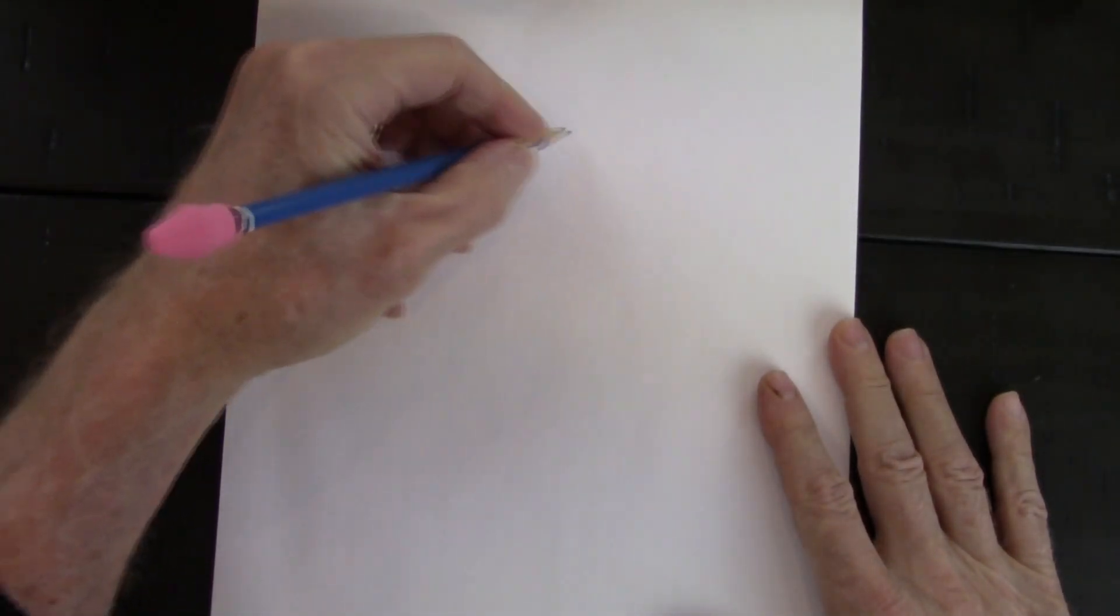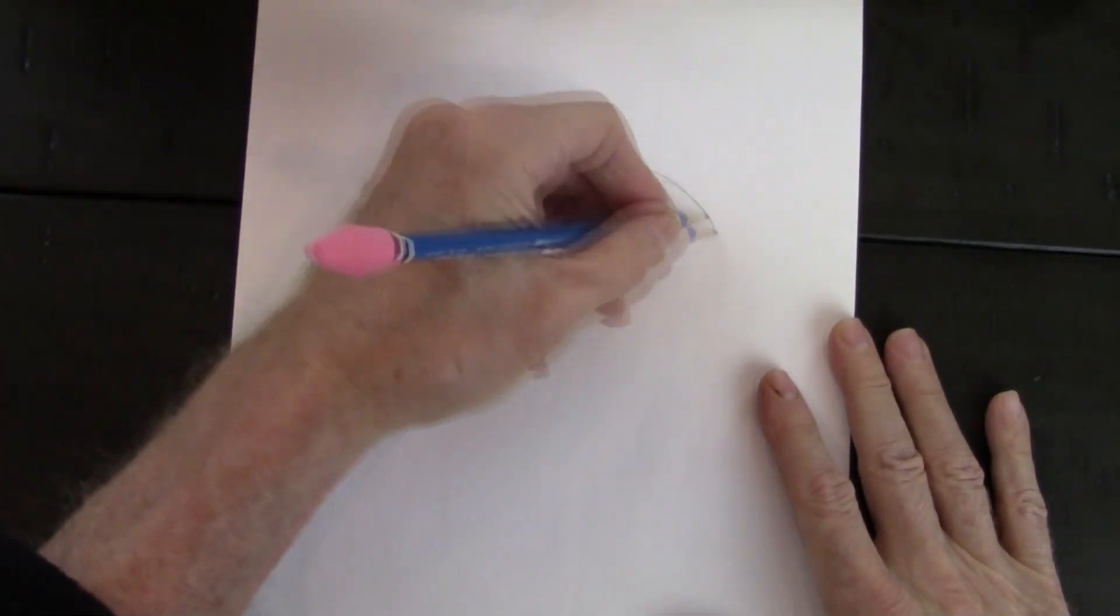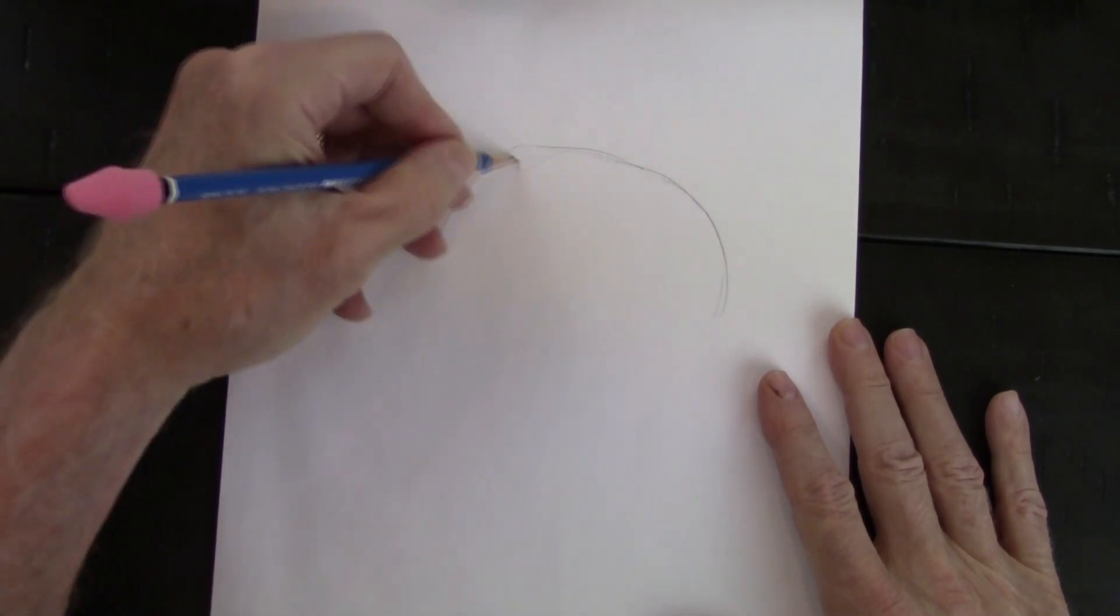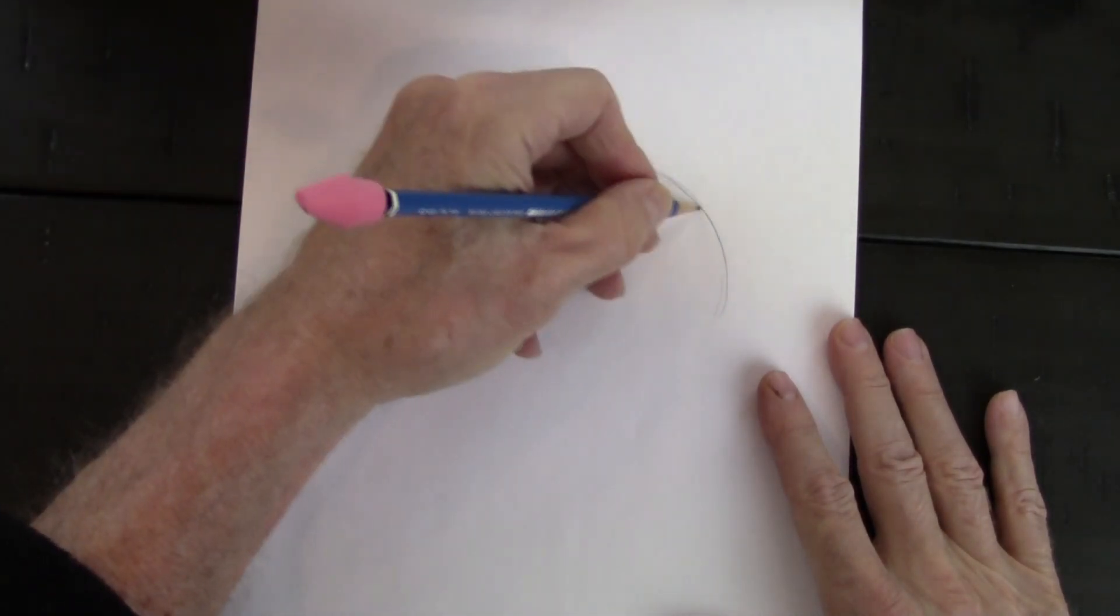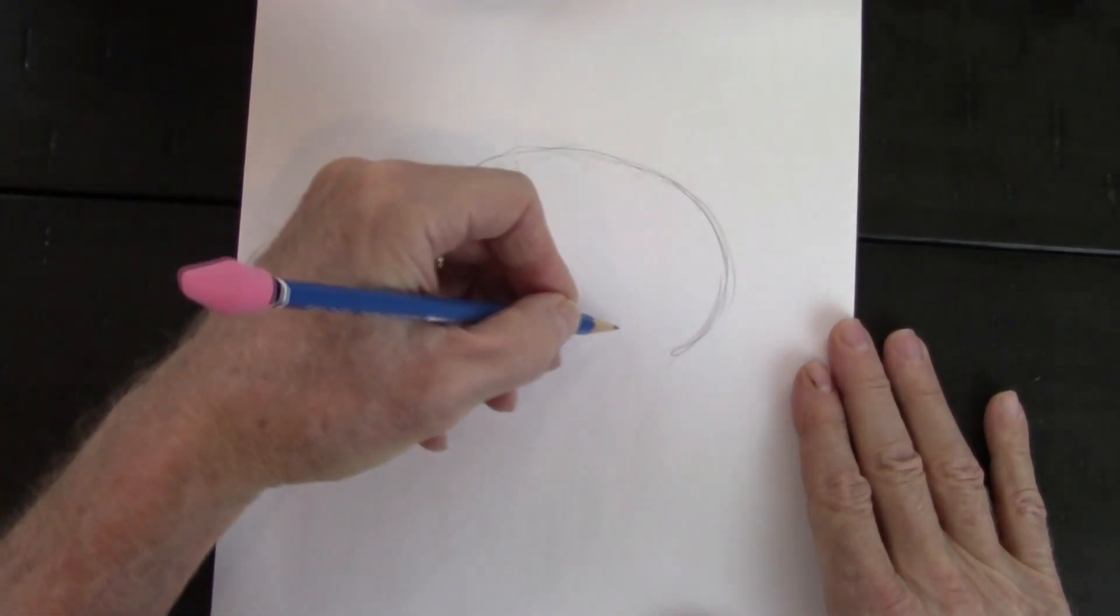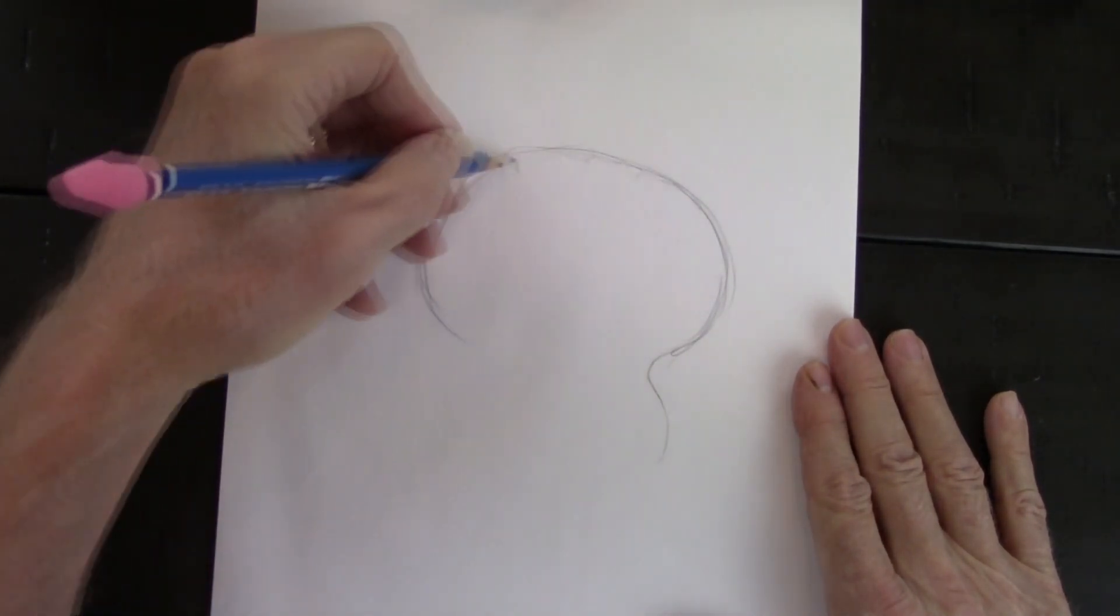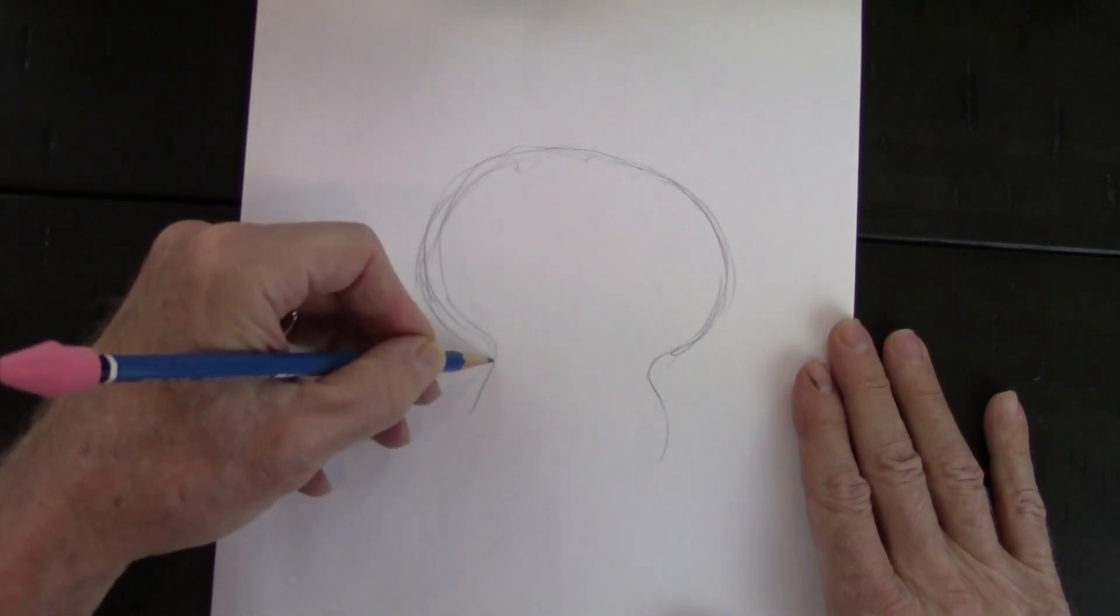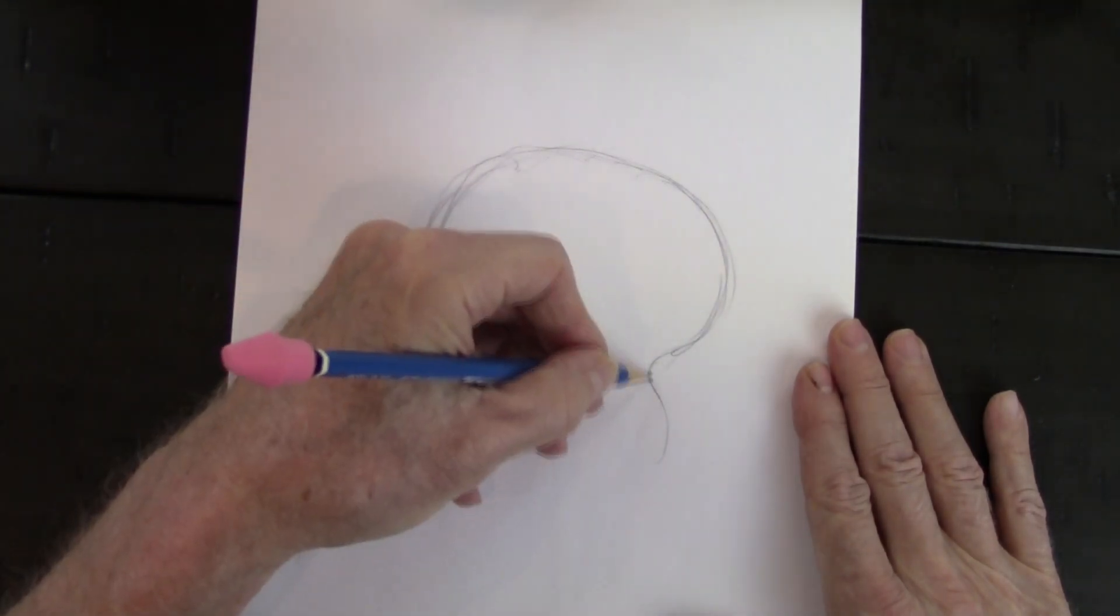So we're going to start with just this big rounded shape up here. Just nicely sketchy. You don't have to really darken it in at this point. And come down here. It's kind of like a light bulb shape in a way. And the bottom is just a little smaller.